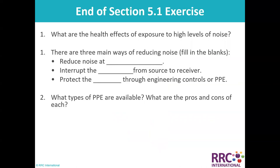End of Section 5.1 exercise questions: What are the health effects of exposure to high levels of noise? There are three main ways of reducing noise — fill in the blanks: reduce noise at source, interrupt the path from source to receiver, and protect the receiver through engineering controls or PPE. What types of PPE are available and what are the pros and cons of each?